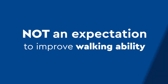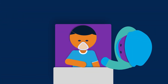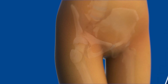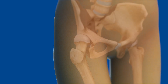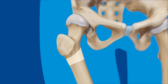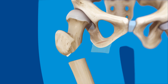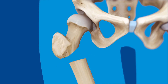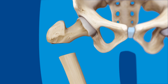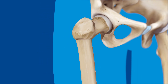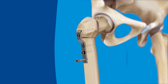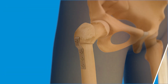To begin the procedure, your anesthesiologist will put you to sleep and administer any extra pain medication as necessary. Next, your surgeon will make an incision in the thigh and remove a wedge-shaped piece of bone from the femur. The leg is moved so that the femur points toward the hip. Your surgeon then secures the bone in place with a plate and screws.